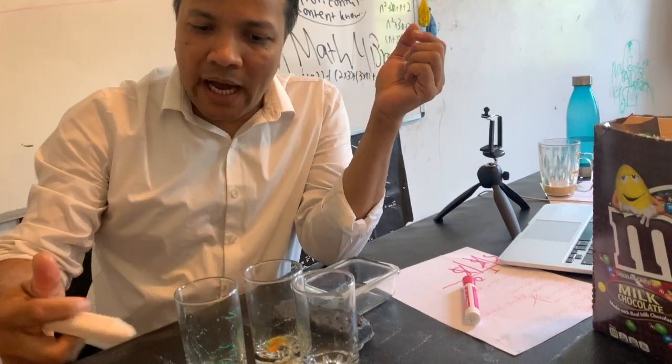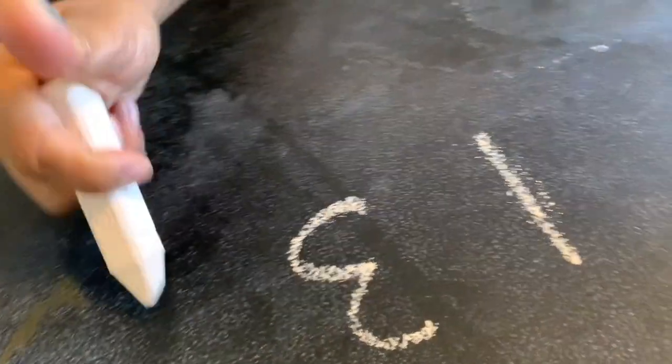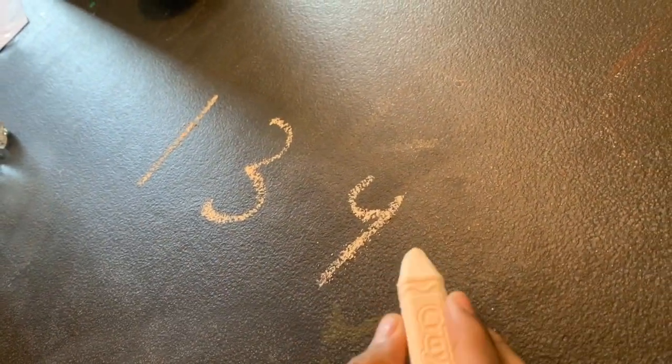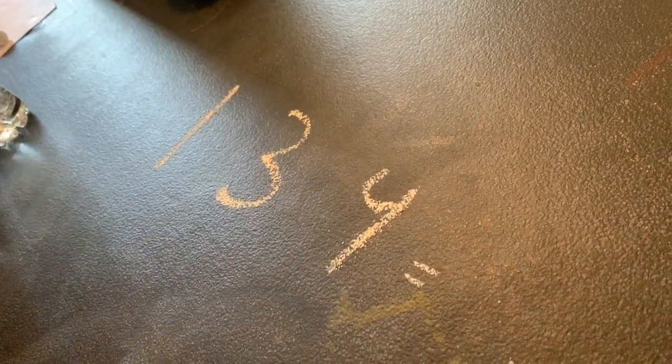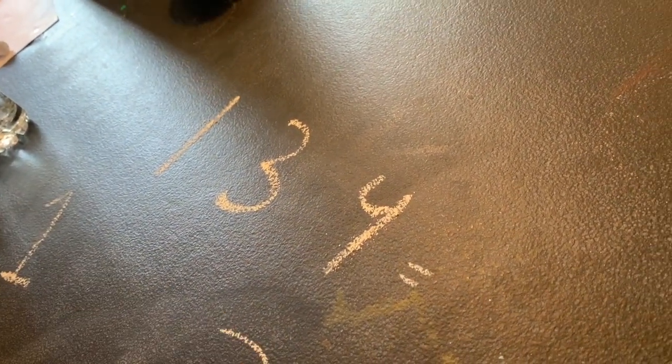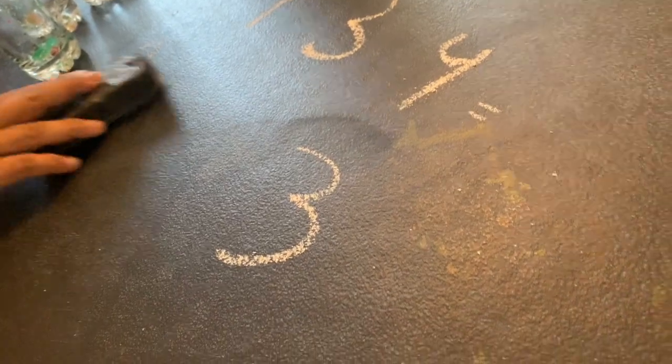So I want you to write 1, 3, 4 in expanded form, and write the place value for 4, place value for 3, and place value for 1. So 1, 3, 4 in expanded form — so I have to expand it. So I'll put the 1 here, the 3 here, and the 4 here. Ah, that's wrong. I expanded it.